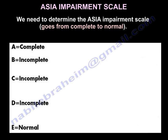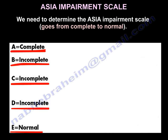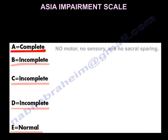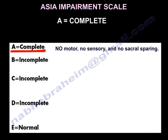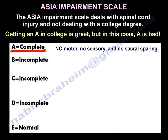The ASIA impairment scale goes from complete to normal: A, B, C, D, E. Grade A is complete — no motor, no sensory, and no sacral sparing. Keep in mind the ASIA impairment scale is dealing with spinal cord injury, not a college degree.